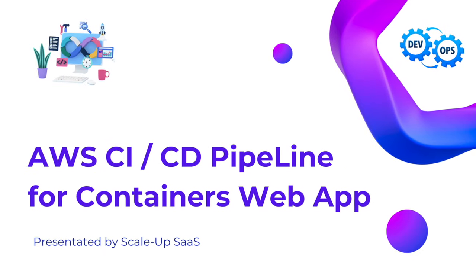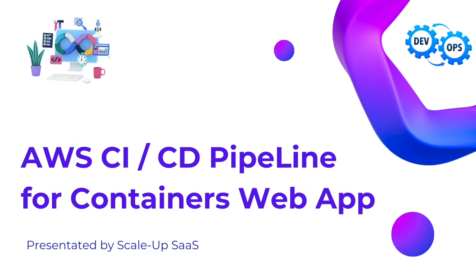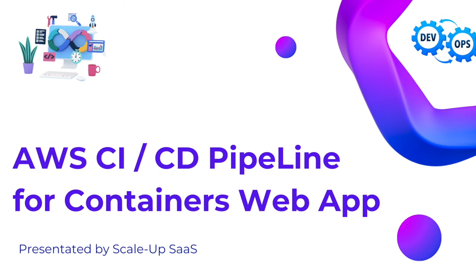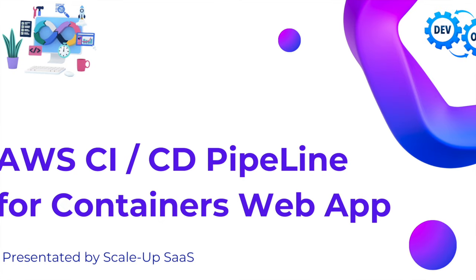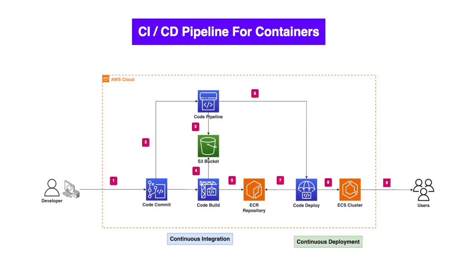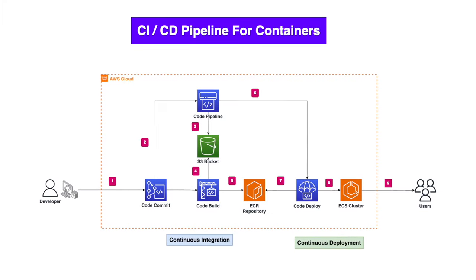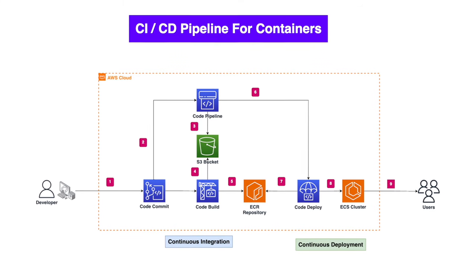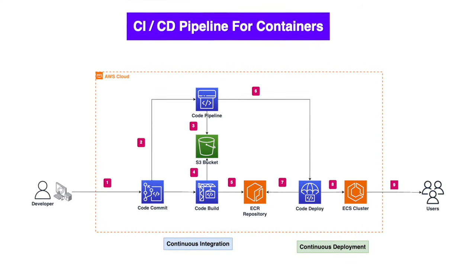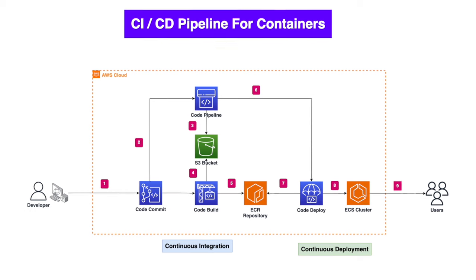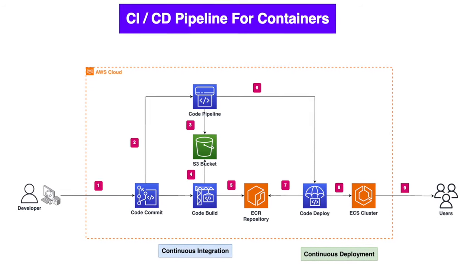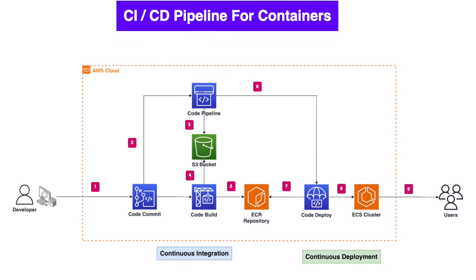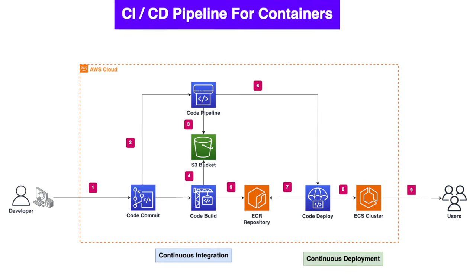In this AWS project video, we're going to share with you a step-by-step tutorial, especially for beginners, on how to create and launch an AWS CI/CD pipeline for a container web application. You will learn how to push your web application to AWS ECR repository, then launch and deploy to AWS ECS cluster, and create a CI/CD pipeline using CodeCommit, CodeBuild, CodePipeline, and CodeDeploy.